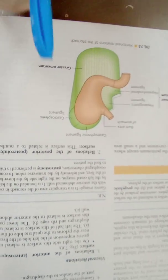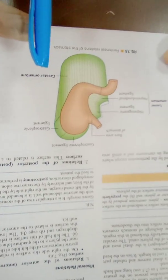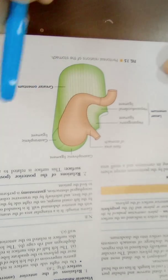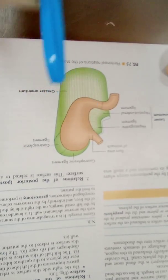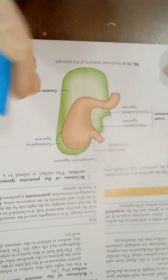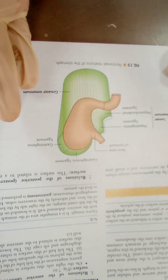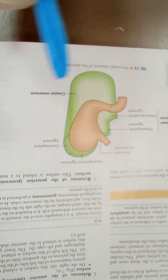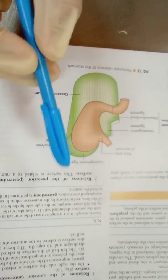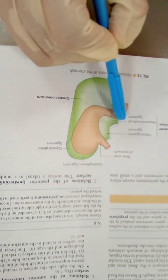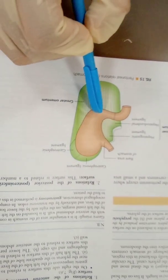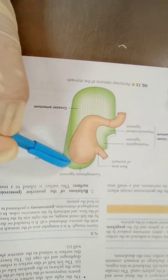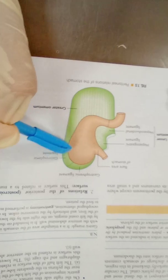Now we come to the relations of the stomach. There are two types: peritoneal relations and visceral relations. The peritoneal relations include four structures: the lesser omentum, the greater omentum, the gastrosplenic ligament, and the gastrophrenic ligament.